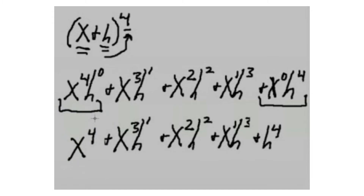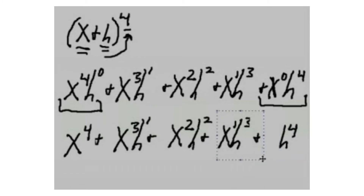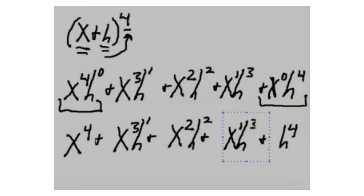[Embedded video] We need to put coefficients in front of these variables. Where do we get them? From Pascal's triangle. The 0th row is for anything raised to the power of 0. The row for power of 4 is our row: 1, 4, 6, 4, 1.